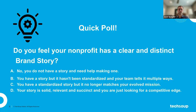Before we move on, let's jump into a quick poll. I'm very interested to hear where everyone currently is. Does your nonprofit have a clear, distinct brand story? Option A: no brand story and you need help making one. Option B: you have a story but it hasn't been standardized — your team is telling it multiple ways across different social media platforms. Option C: you have a standardized story but it no longer matches your evolved mission. Option D: you have a solid story, it's relevant and succinct, and you're just looking for a pointer or two.